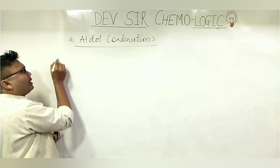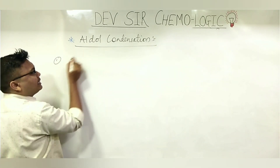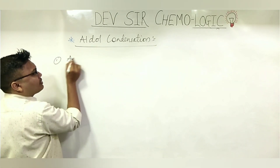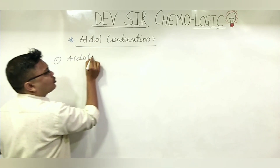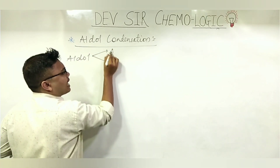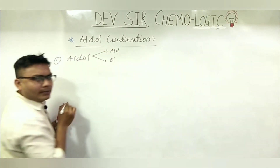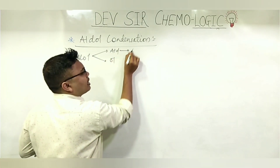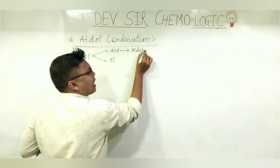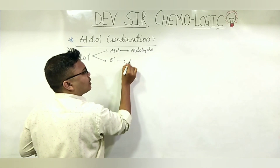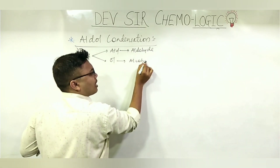First point: the word is 'aldol.' There is one word which is aldol — this is made up of two words. One is 'ald' and the second one is 'ol.' 'Ald' stands for aldehyde, and 'ol' is what? That is alcohol.